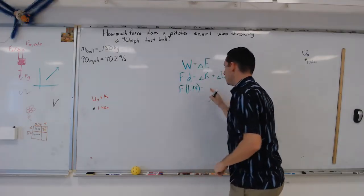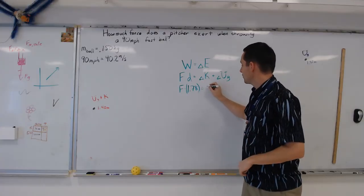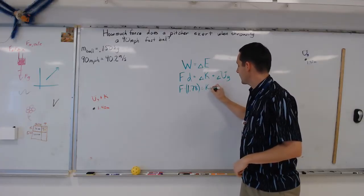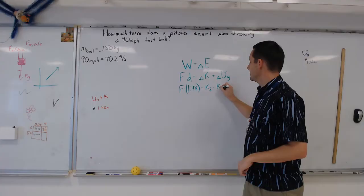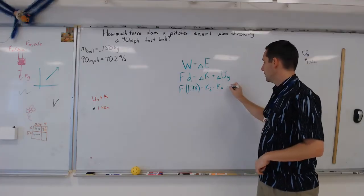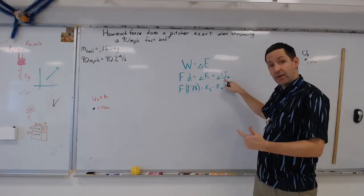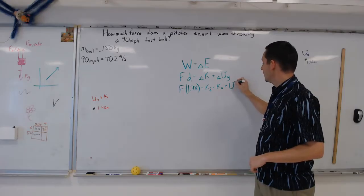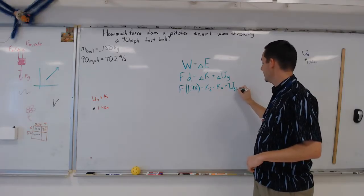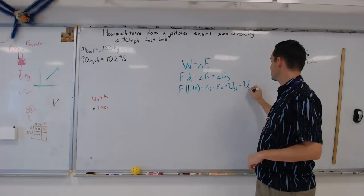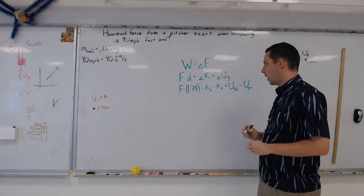That should be equal to the change in kinetic energy. So that's going to be the final kinetic energy minus the initial kinetic energy plus the change in gravitational potential energy, which will be the gravitational energy final minus the gravitational potential energy initial.